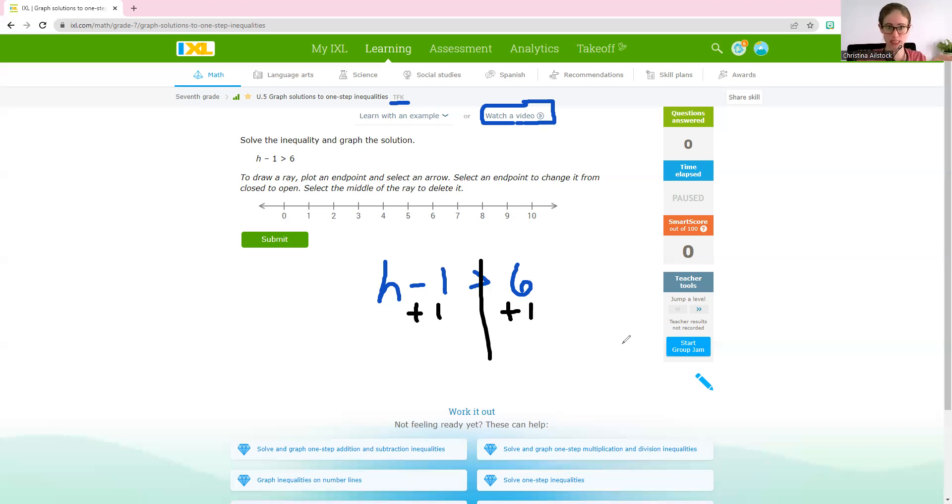So this minus 1 here is in the way of our h being by itself. So the way that we can get rid of that is by doing the inverse, by doing the opposite. So the opposite of subtracting 1 is adding 1. We're going to add 1. And now we have to do this to both sides of our inequality because we need to keep it balanced. We're not creating a brand new problem. We're just moving things around so we can get that h by itself and discover what value it represents, what number h is equal to, or in this case, greater than. So that's why we have to do it to both sides. The reason that we do the inverse, that we always do the opposite, is because it cancels it out. It moves it over. Minus 1 plus 1, so 1 minus 1, is 0. That cancels out, that goes away, and we're just left with h is greater than 6 plus 1 is 7. So our solution is x is greater than 7.